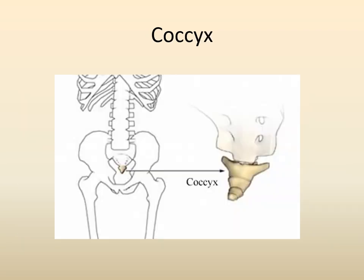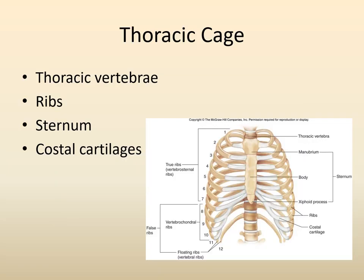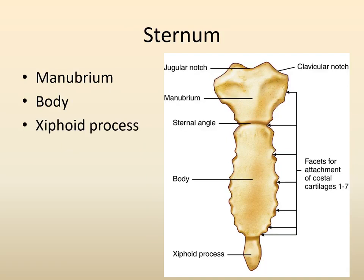The thoracic cage is composed of the thoracic vertebrae, ribs, sternum, and costal cartilages that attach the ribs in front to the sternum. The sternum is divided into three parts: the manubrium, the body, and the xiphoid process. When doing CPR, you want your hands positioned over the body of the sternum — not on the xiphoid process at the bottom, because pressure there can break it off and puncture the liver, which is right below it.